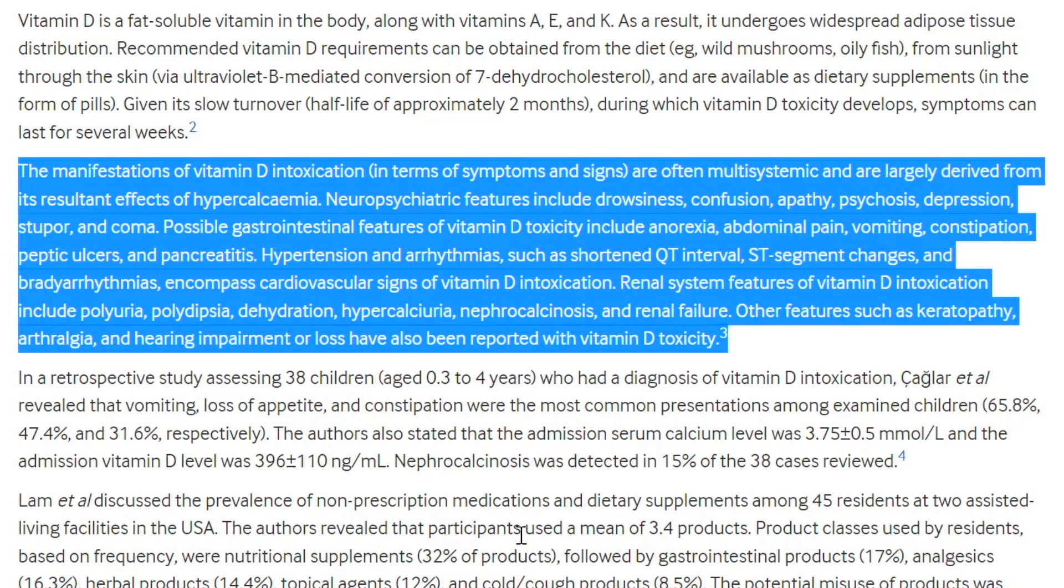Possible gastrointestinal features include anorexia, abdominal pain, vomiting, constipation, peptic ulcers, and pancreatitis. Hypertension and arrhythmias such as shortened QT interval, ST segment changes, and bradyarrhythmias encompass cardiovascular signs of vitamin D intoxication. These are things you would find on an EKG. If you want more help reading EKGs, visit us at medcram.com. We have one of the best EKG courses on the internet.